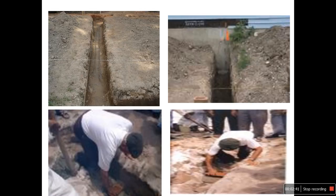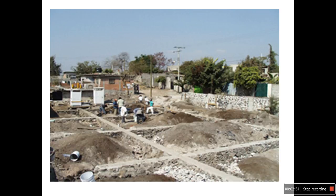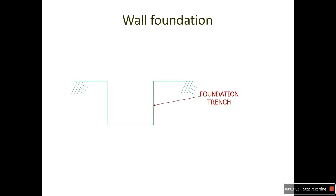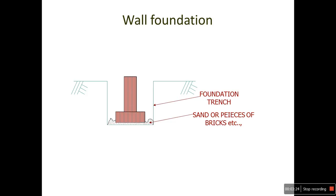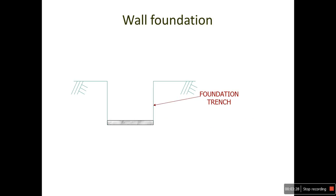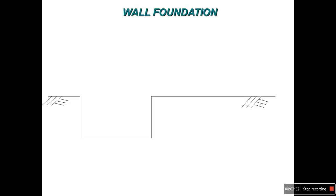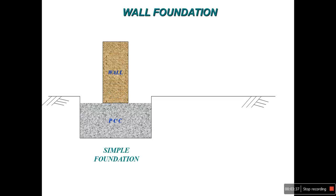This picture clearly shows the shallow foundation, indicating the depth and the width of the foundation. For wall foundation, this is a typical foundation trench available below the ground level. A rammer is used to compact sand or pieces of bricks in order to make a solid substrate. After that, concrete is done, and a layer of PCC along the wall can be constructed. This is a simple example for a wall foundation.